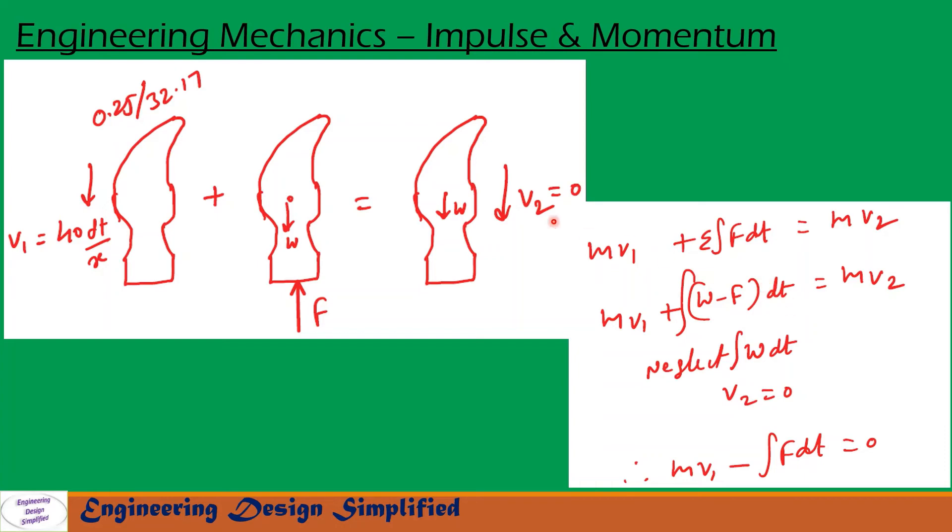That means integral of W dt from this term we neglect that. And v2 is zero, so this equation can be written as m v1 minus integral of F dt equals 0.